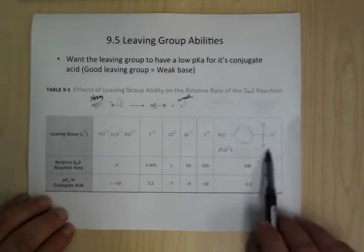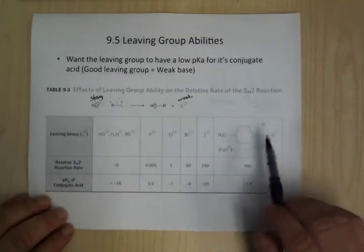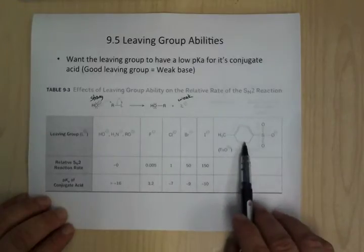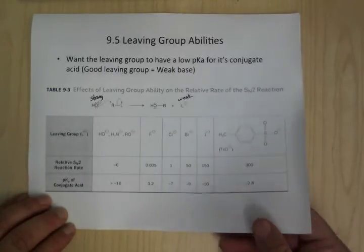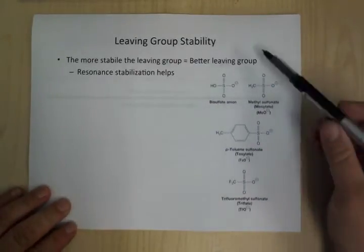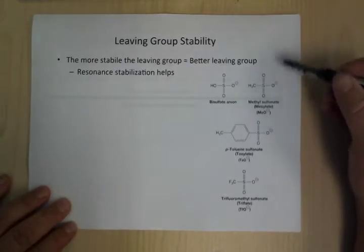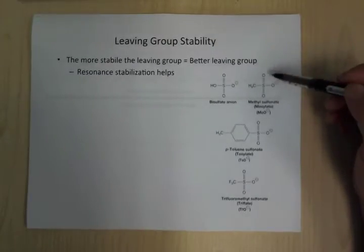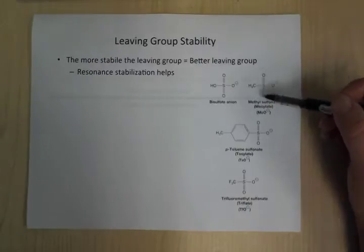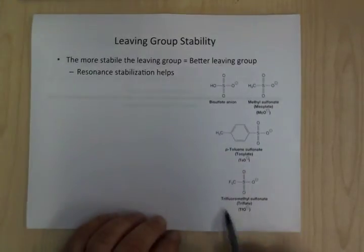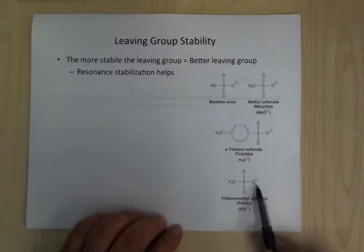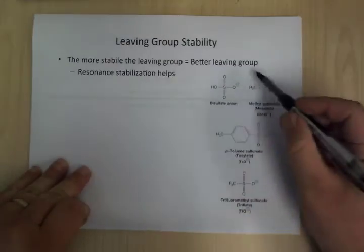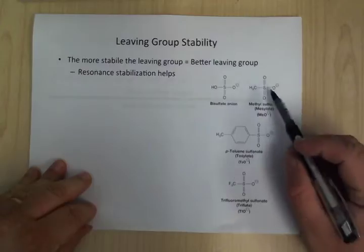HCl, HBr, HI, and tosylate — you can think of tosylate as the equivalent of sulfuric acid — these are all going to be strong acids, which makes these guys pretty good leaving groups. The sulfonate leaving groups are really good. You can have mesylate with a methyl group, tosylate with toluene, and triflate with a trifluoromethyl group, which is especially good. The fluorine bonds are very electronegative, creating strong inductive effects, and you also have resonance stabilization, which makes them excellent leaving groups.